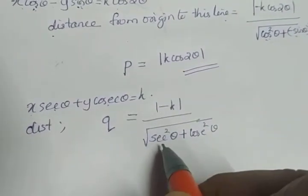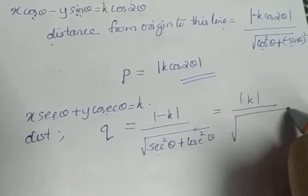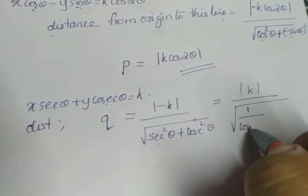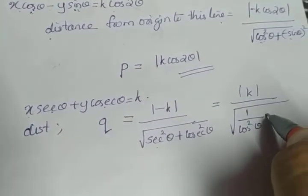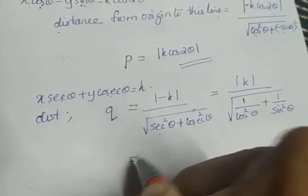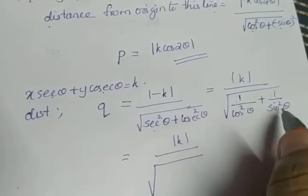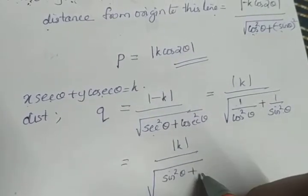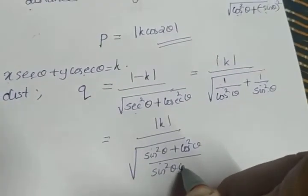Converting into sin and cos: sec²θ = 1/cos²θ and cosec²θ = 1/sin²θ. Taking the LCM inside the square root gives (sin²θ + cos²θ) / (sin²θ cos²θ).